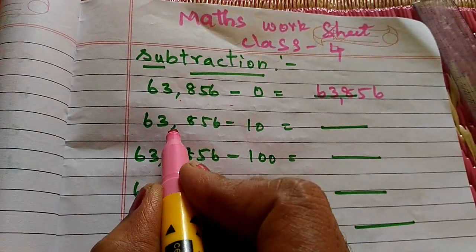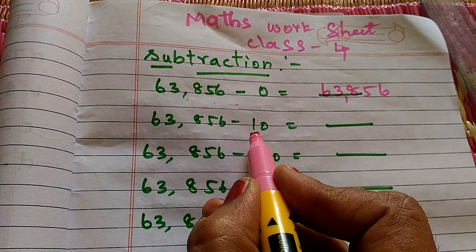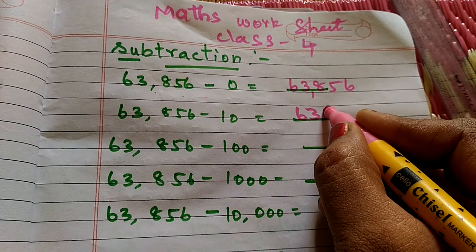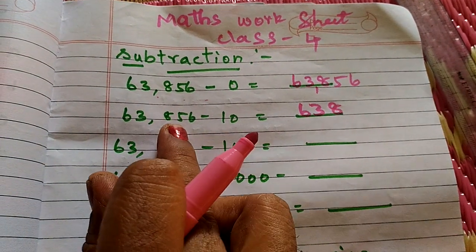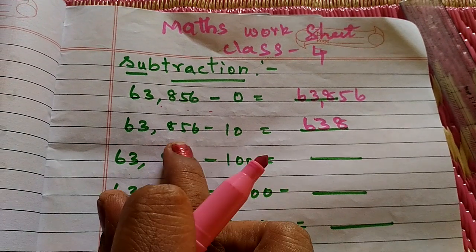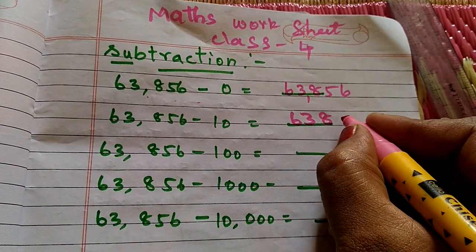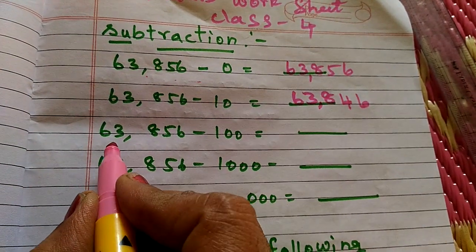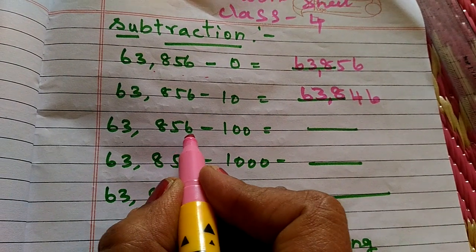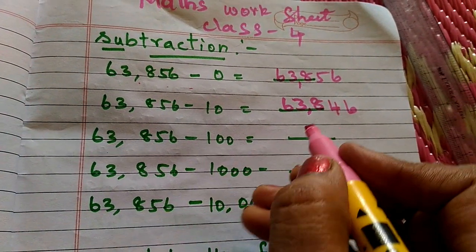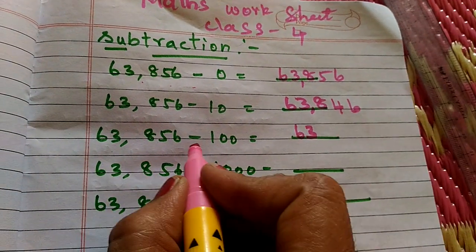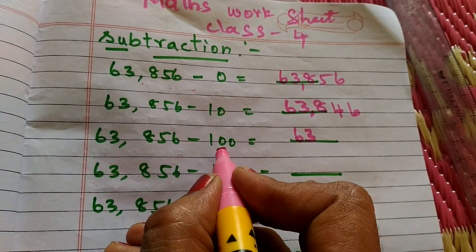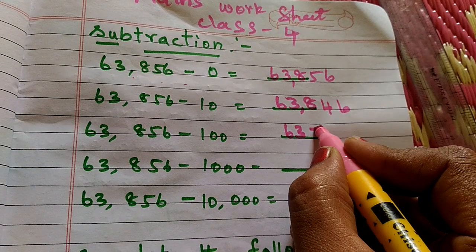Then 63,856 minus 10 equals 63,846. Then 63,856 minus 100 equals 63,756.